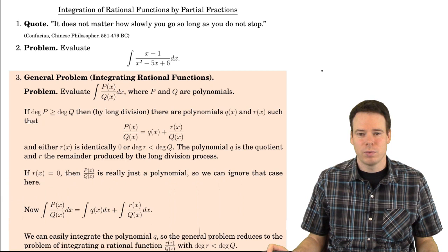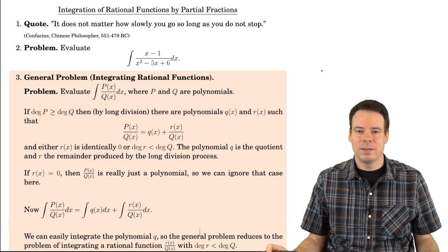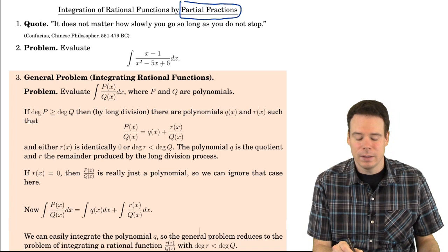Hi everyone. In this section we're going to look at a particular class of functions known as rational functions. This is functions of the form polynomial over another polynomial. We're going to look at a technique for finding anti-derivatives of rational functions. This technique is known as decomposition by partial fractions — that's where the term partial fractions comes from. So what exactly are partial fractions?